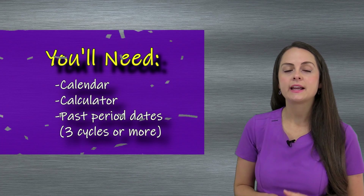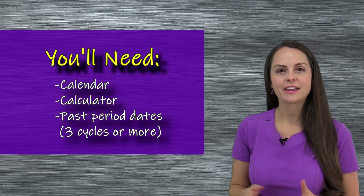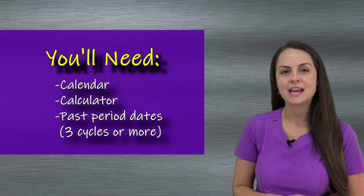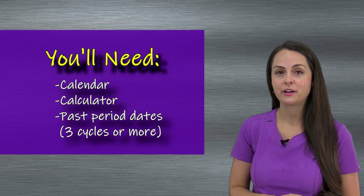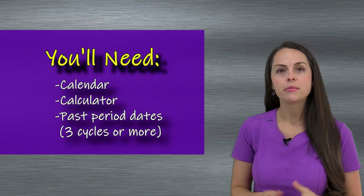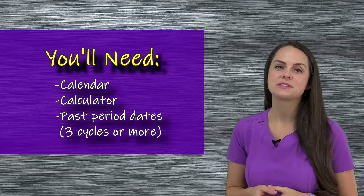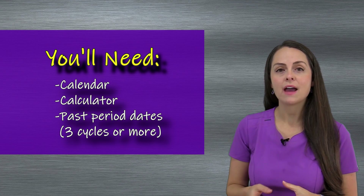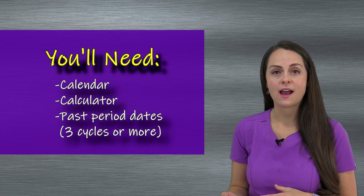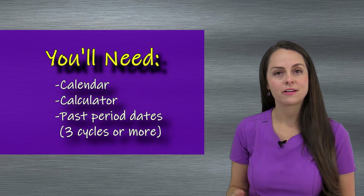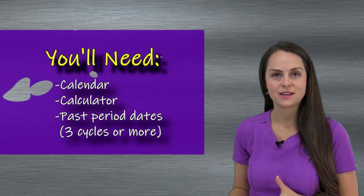In order to do this, you're going to need the following supplies: a calendar, a calculator, and dates of when your period started — preferably at least three cycles, because we're going to average those cycles out to help us calculate that menstrual cycle length.